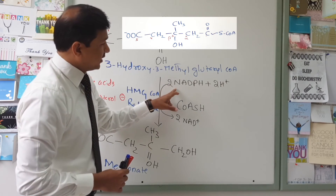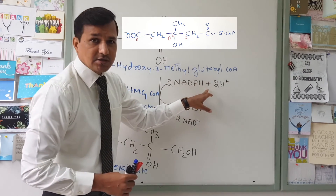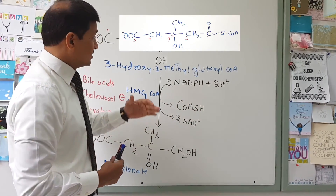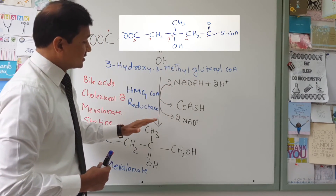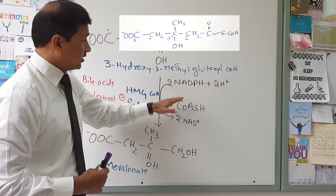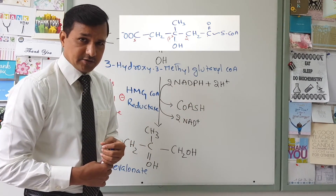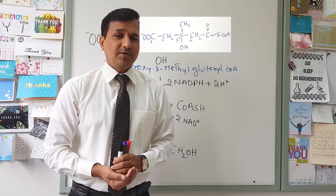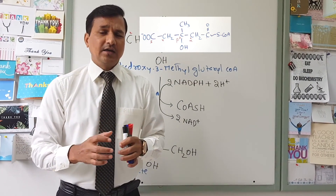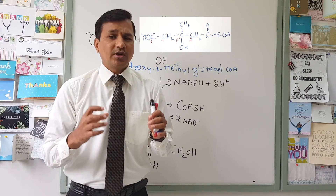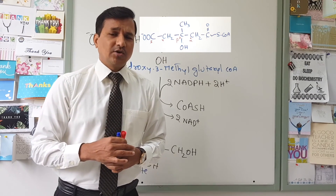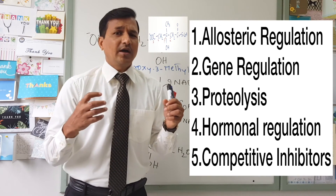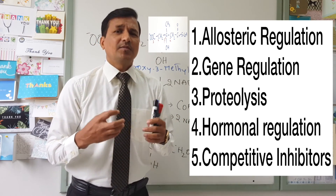This reaction is catalyzed by HMG-CoA reductase. During this reaction, two molecules of NADPH are consumed and two molecules of NAD+ are released. So basically, 3-hydroxy-3-methylglutaryl-CoA is reduced into mevalonate upon consumption of NADPH. HMG-CoA reductase is considered the rate-limiting enzyme and also the most regulated enzyme in cholesterol biosynthesis.